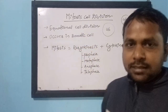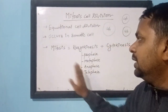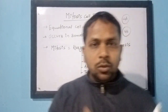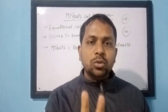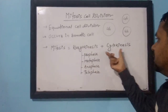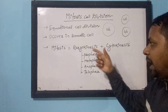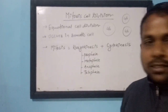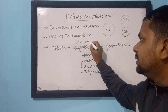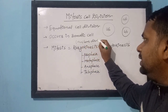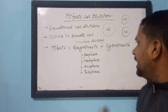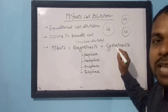The whole process of mitosis cell division is divided into two groups: karyokinesis and cytokinesis. Karyokinesis means division of the nucleus — nuclear division. Cytokinesis means division of the cytoplasm — cytoplasmic division.